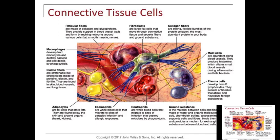The ground substance is the material between the cells and the fibers. It's made up of hyaluronic acid, chondroitin sulfate, and glucosamine. It supports the cells and fibers, binds them together, and provides a medium for exchanging substances between the blood and the cells. When people have cartilage issues, you'll often hear of them supplementing glucosamine chondroitin sulfate. The problem is it takes a long time — people go through several bottles before they feel changes.